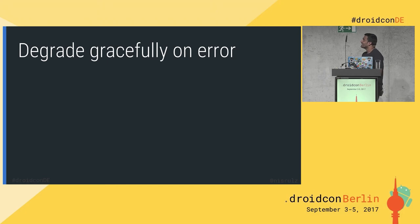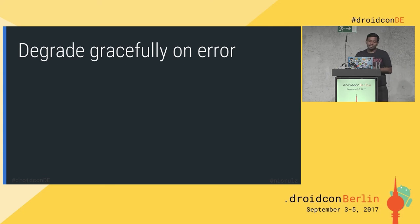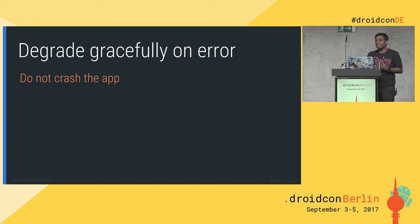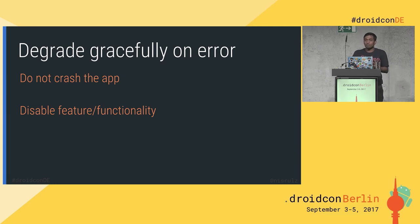Degrade gracefully on error. One SDK I worked with from an enterprise — whenever their SDK would fail, it would crash the app along with it. You do not want to crash the app. If your library crashes, you need to catch that error and do something about it — disable the functionality. An unstable library crash is a problem the app developer cannot solve; they have to come back to you. So catch the error and disable the functionality.